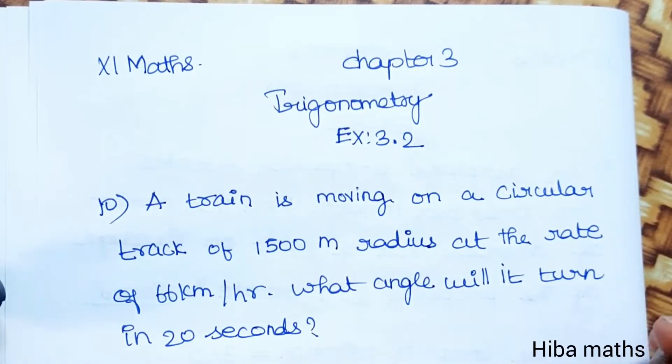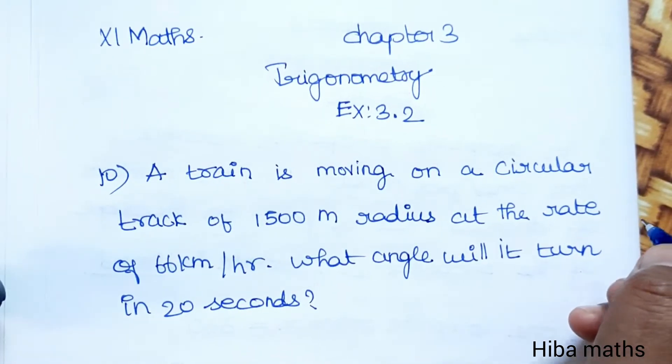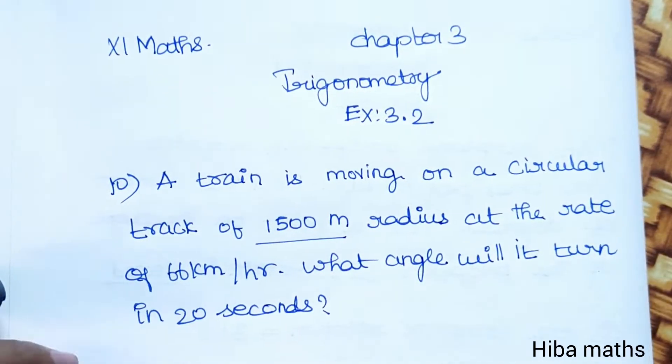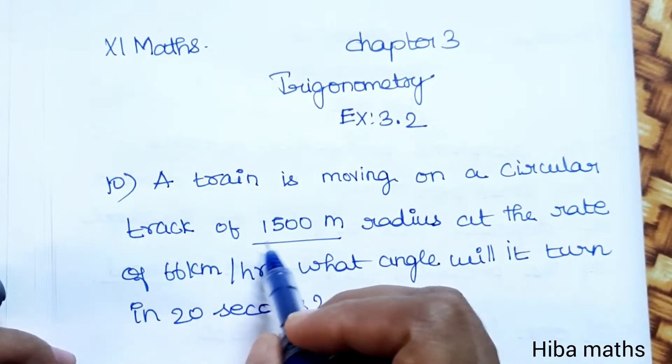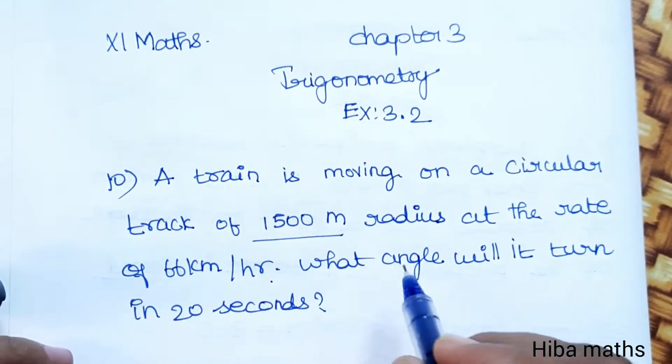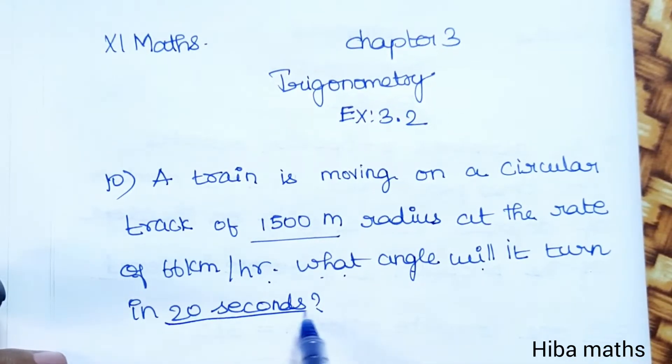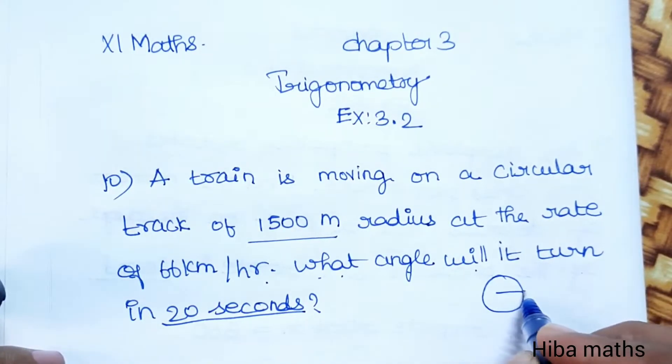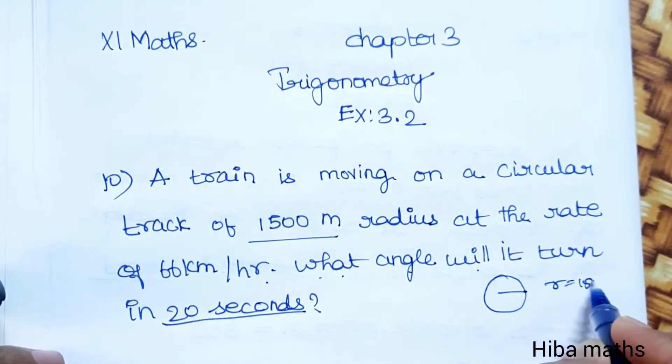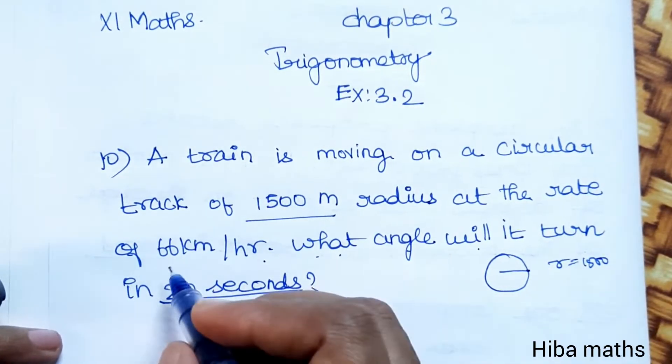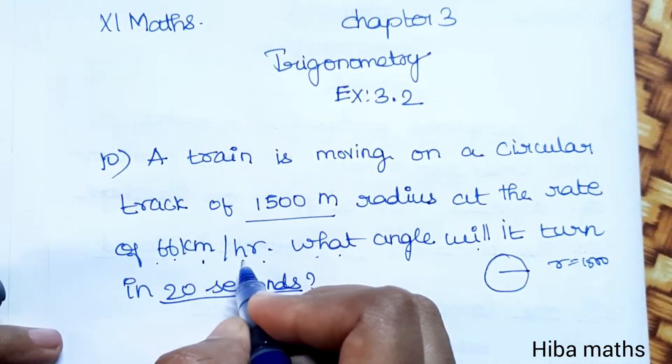Hello students, welcome to Hiba Maths. 11th Standard Maths Chapter 3 Trigonometry Exercise 3.2, 10th question. A train is moving on a circular track of 1500 meter radius at the rate of 66 km per hour. What angle will it turn in 20 seconds?